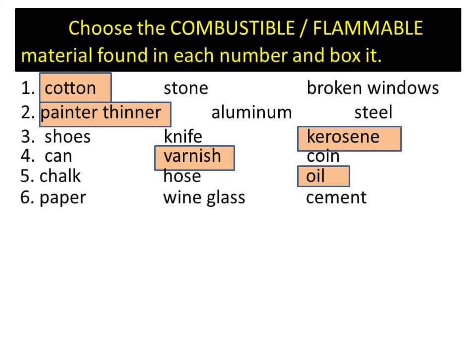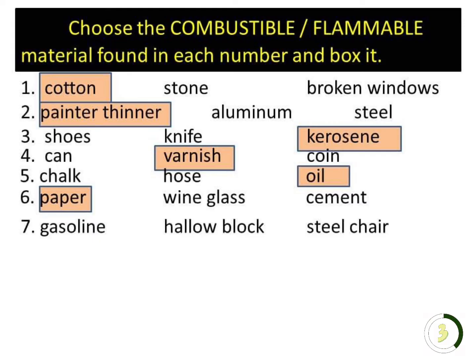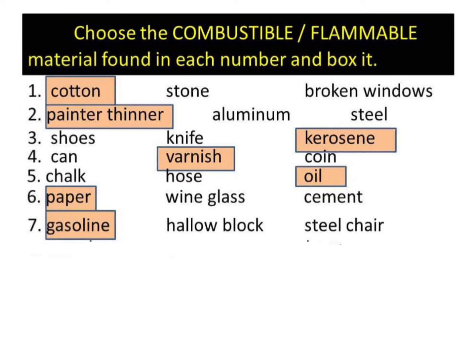Number 6: Paper, wine glass, cement. Answer: Paper. Number 7: Gasoline, hollow block, steel chair. Answer: Gasoline.